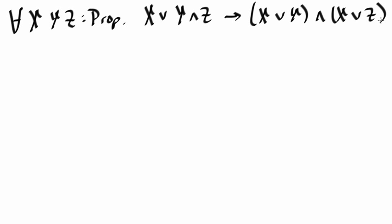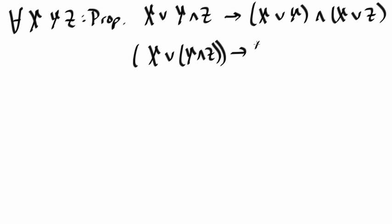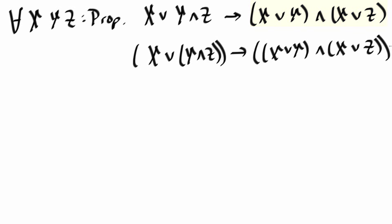The first thing we need to make sure of is that we can properly read this proposition. If I were to put in parentheses everywhere under the universal quantifier it would say: (x or (y and z)) implies ((x or y) and (x or z)). Generally we don't write this many parentheses, so we use conventions: 'and' binds more tightly than 'or', and 'or' binds more tightly than implication. So in the proposition I wrote the minimal number of parentheses needed.